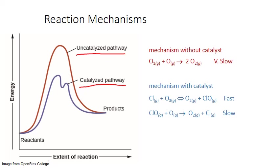When we can break down a net process into multiple steps, we call these steps a reaction mechanism. Each is known as an elementary step and it represents one collision or interaction that occurs with the molecules involved in that net process. If we add together the elementary steps, we get the net process.